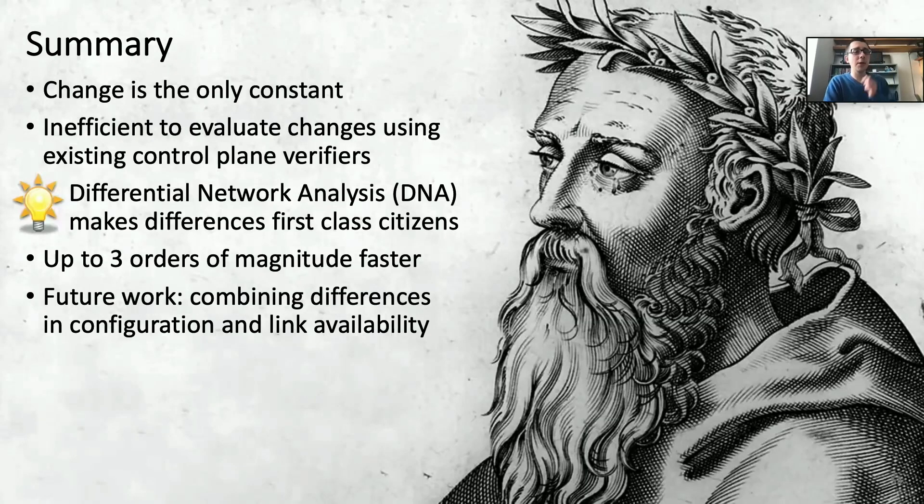So in conclusion, I hope I've convinced you that change is the only constant in networks, and it's inefficient to evaluate changes using existing control plane verifiers. And so we've introduced differential network analysis that makes differences first-class citizens, and is able to analyze changes and identify differences in end-to-end properties through orders of magnitude faster than using existing verifiers.